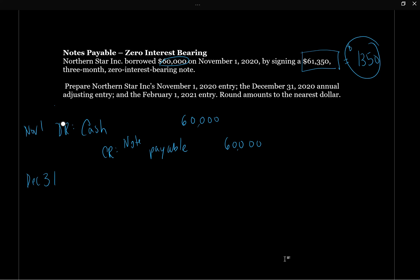On December 31st, November and December is two months. This $1,350 is our interest for three months, so we prorate it as two-thirds of three months, which gives us $900. That's the interest we need to record. We're going to debit interest expense because it has to go through our income statement — we need to expense this $900 that we're paying in interest on this zero interest bearing note.